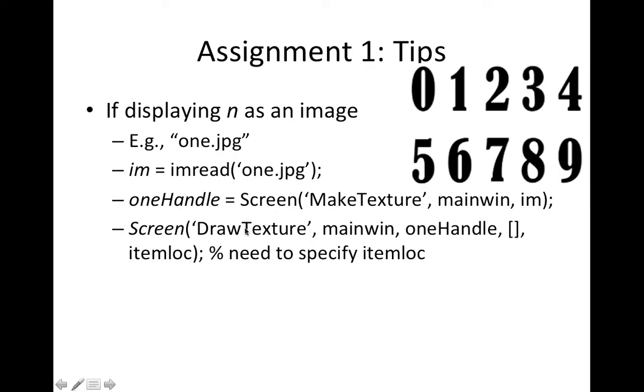So after you made the texture, you can then draw the texture. You're going to draw texture onto the main window. You're going to specify this is the thing that you want to draw and you want to specify the position. So in your code, you'll need to specify exactly what this parameter is.